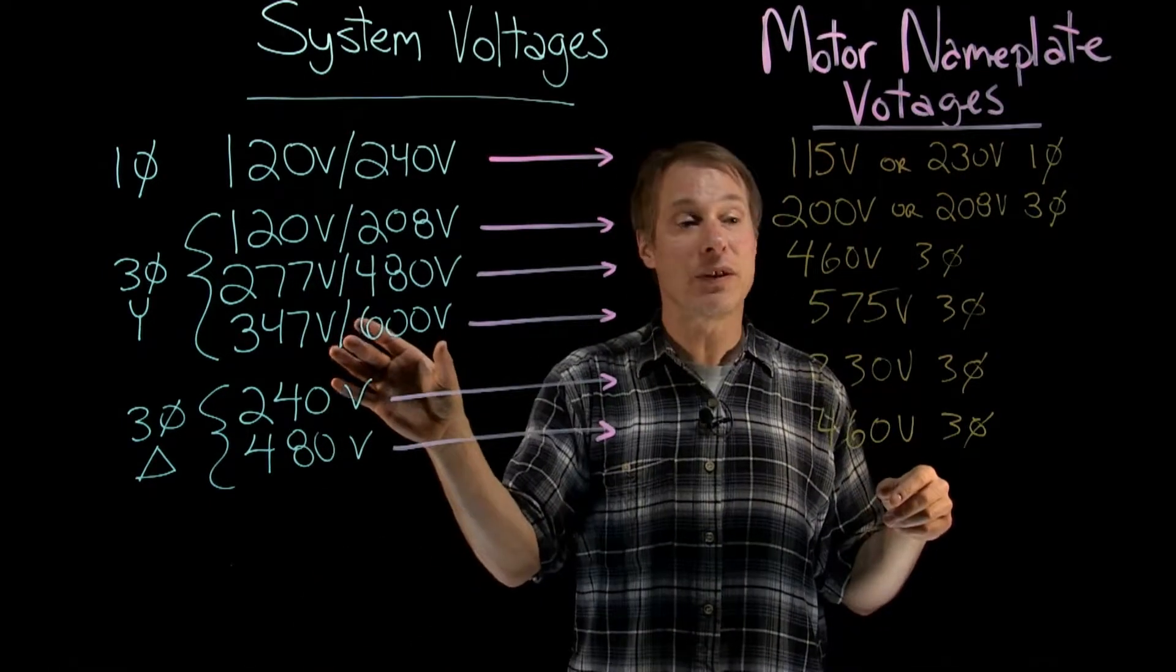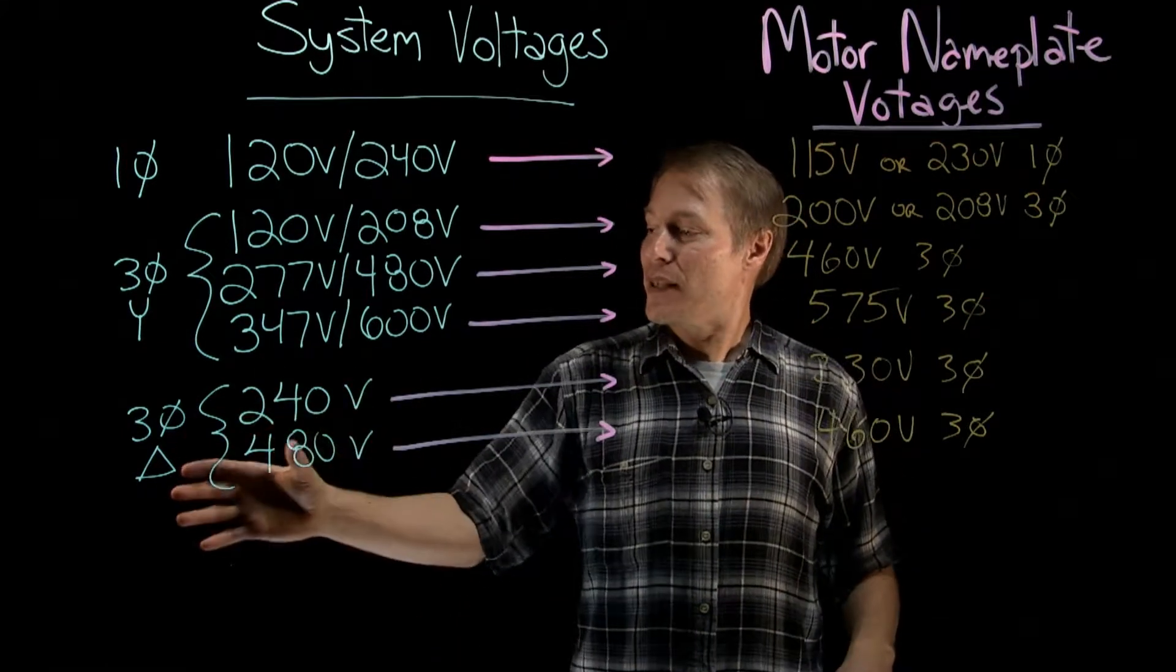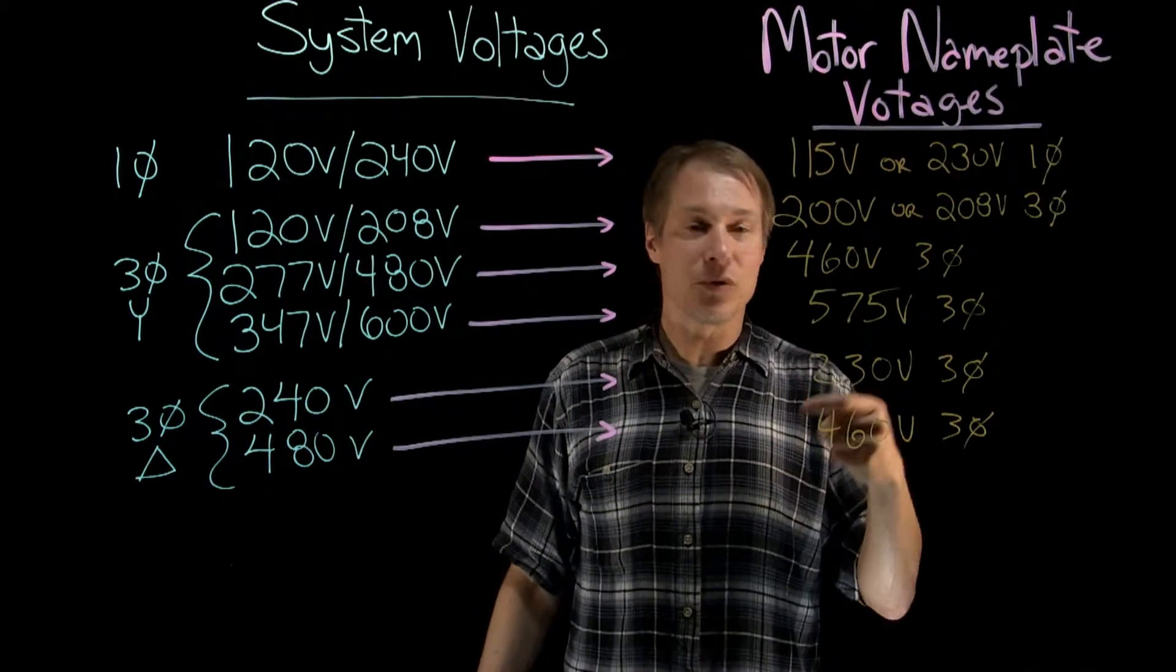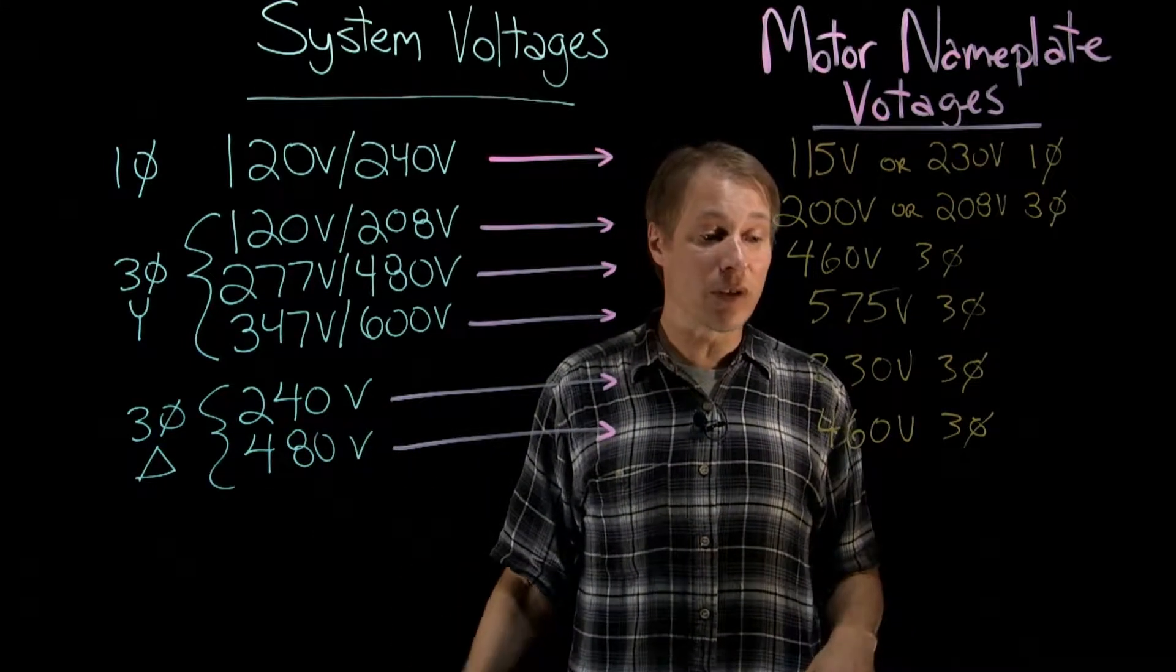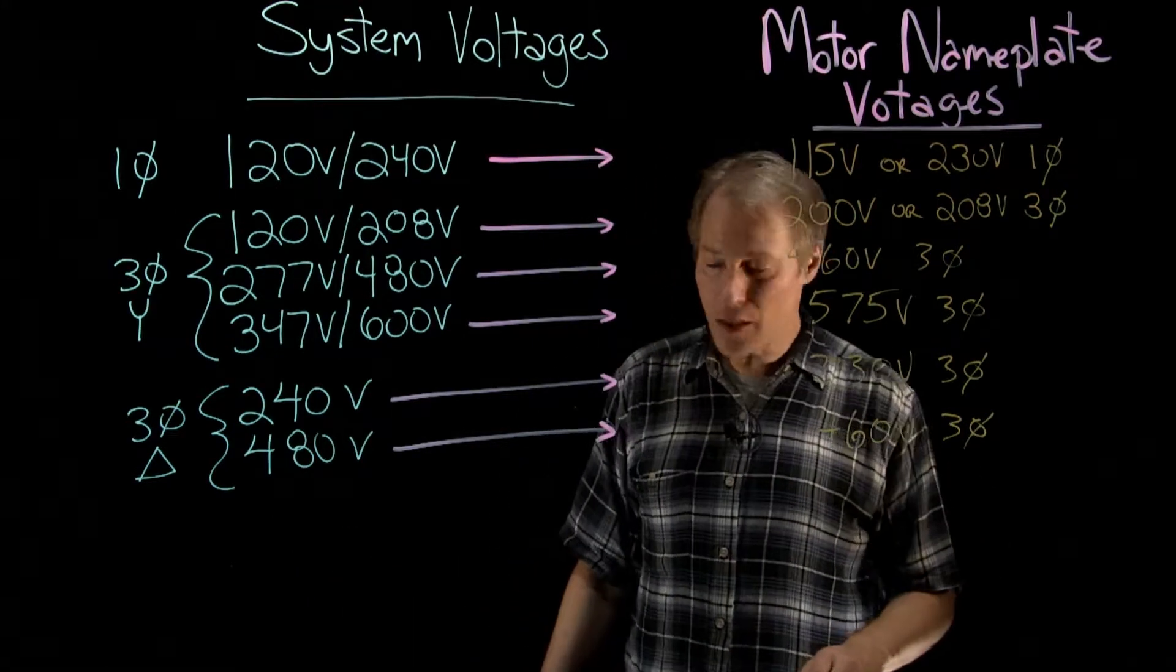And then for the delta systems, the 240V system would connect to a 230V three phase motor. And then the 480V would connect to the 460V three phase motor.